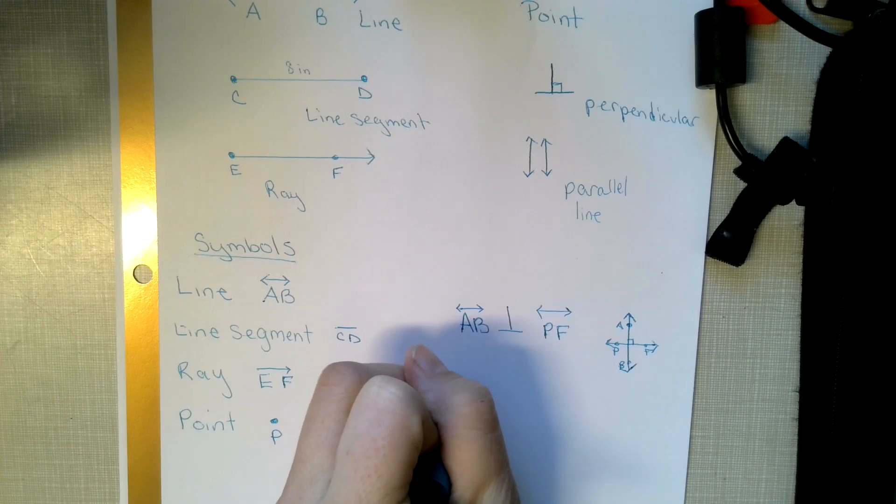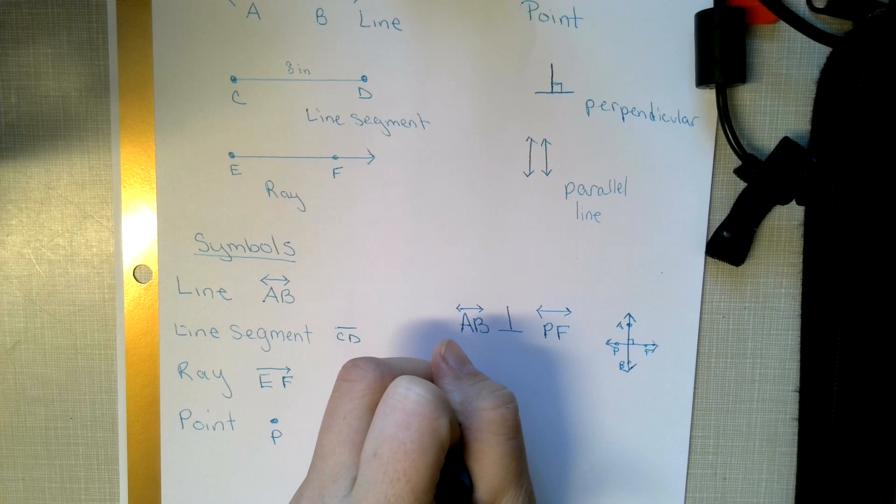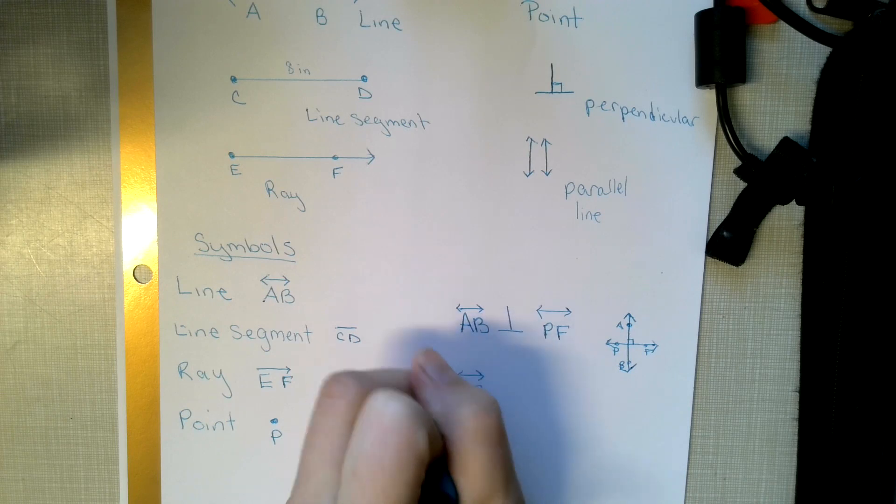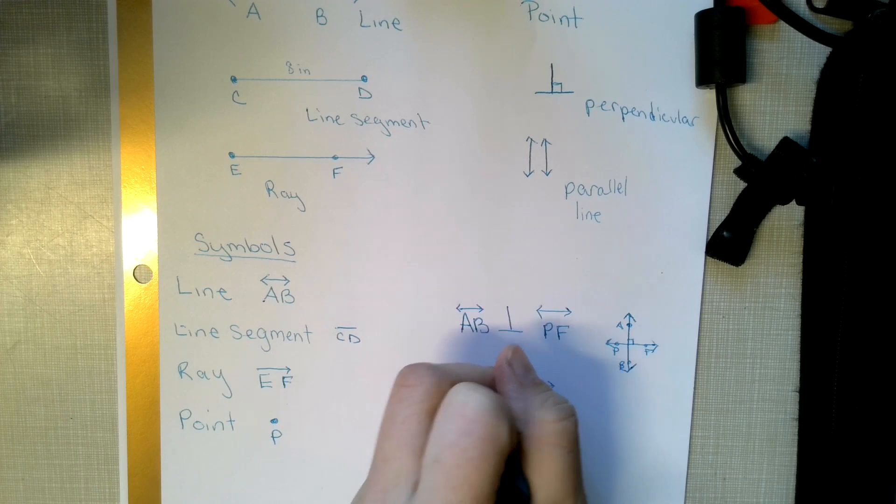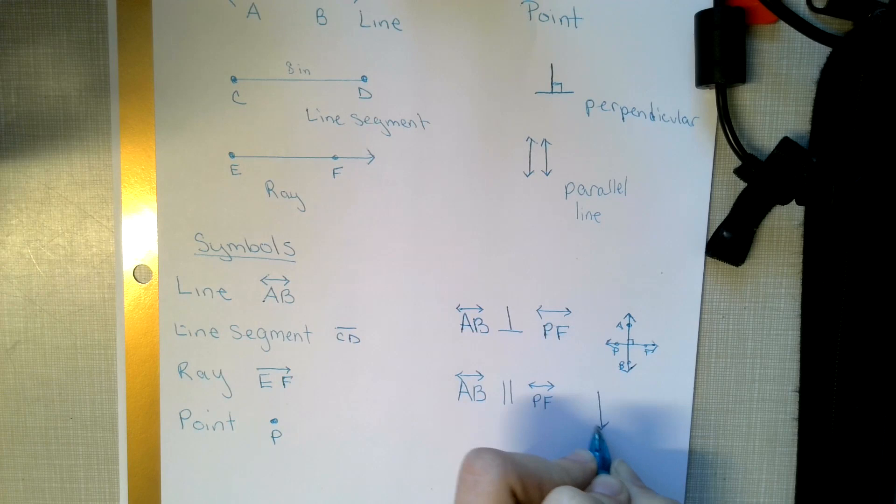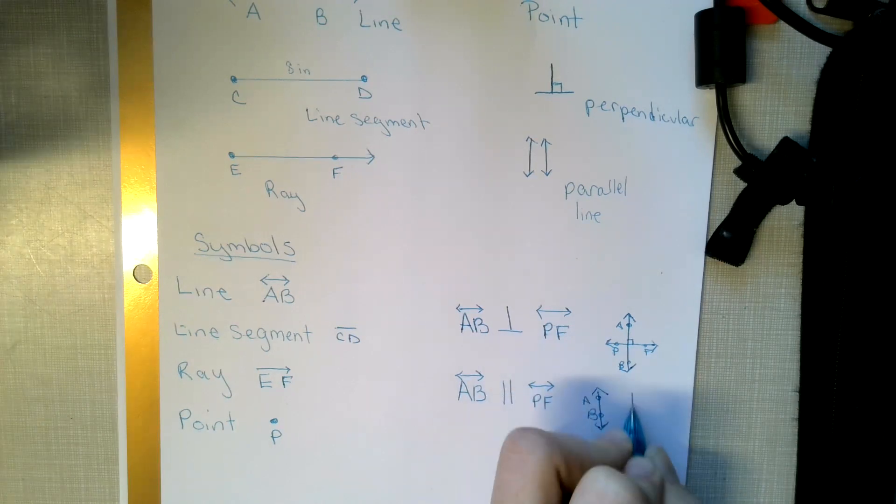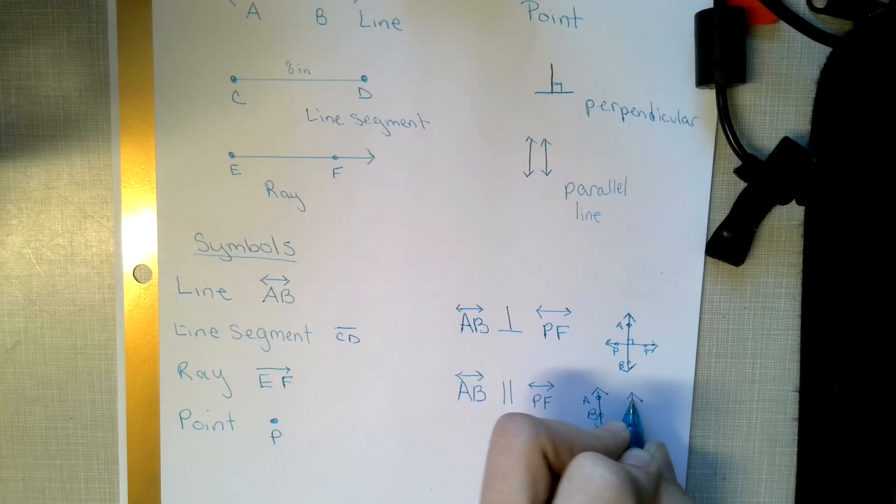I could do the same thing. If I just redraw this, I could say AB. So I could do line AB is parallel to line PF. If I did this, AB, PF. Okay.